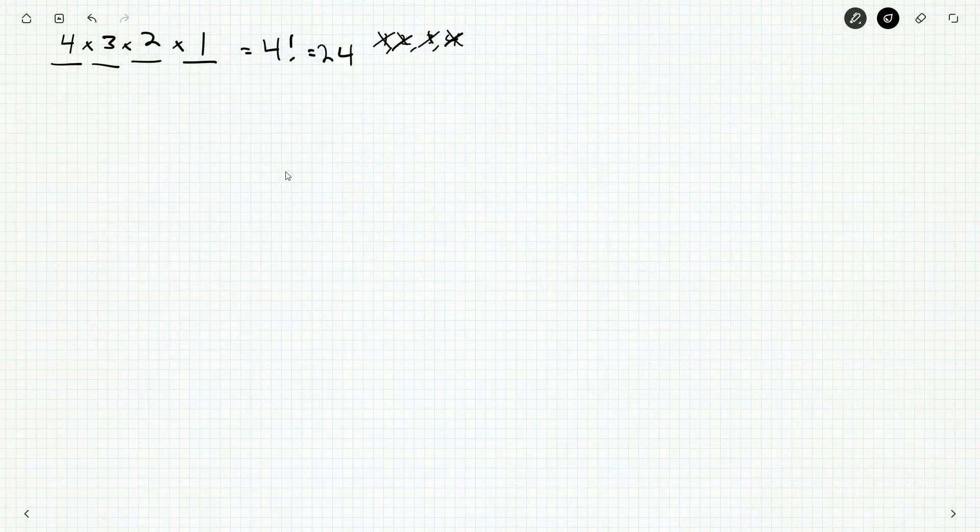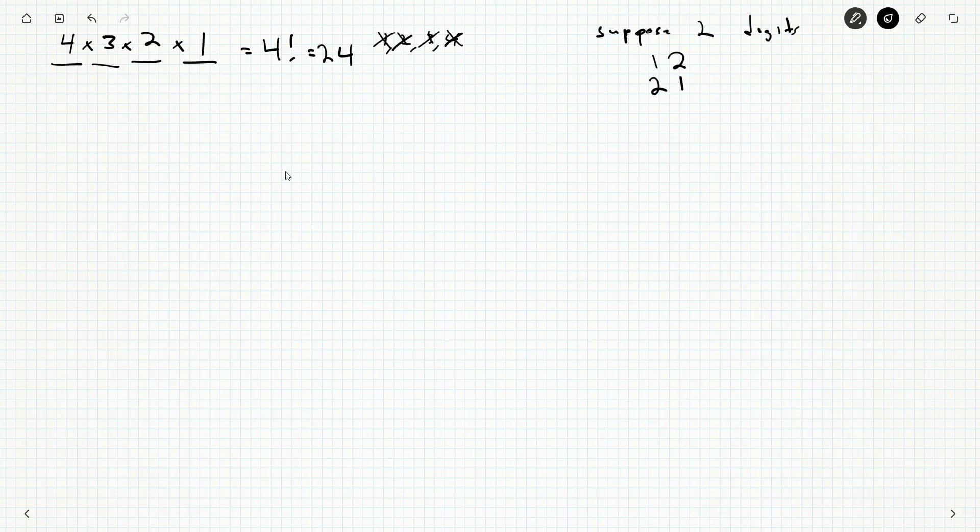I'm going to start by looking at a smaller case. This is something you can do if you're a little stuck, if you think the numbers are too big to work with. Look at a smaller case. So suppose we only had two digits. What numbers could we have? We could have 1, 2, or 2, 1. 12 and 21. If I add these guys up, we get 33.